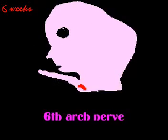The sixth arch gives rise to the intrinsic muscles of the larynx. The nerve supply to the sixth arch is the recurrent laryngeal branch of the vagus nerve.